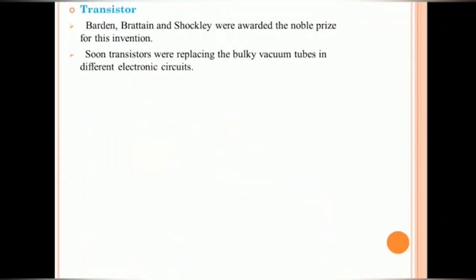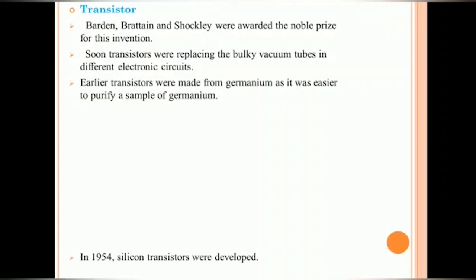The transistor simply called as BJT bipolar junction transistor. The era of semiconductor electronics began with the invention of junction transistor. Burden, Breton and Shockley were awarded the Nobel Prize for this invention. Soon, the transistors were replacing the bulky vacuum tubes in different electronic circuits. Earlier transistors were made from germanium as it was easier to purify a sample of germanium. But in the year 1954, silicon transistors were also developed. You can see the transistor, how it looks.